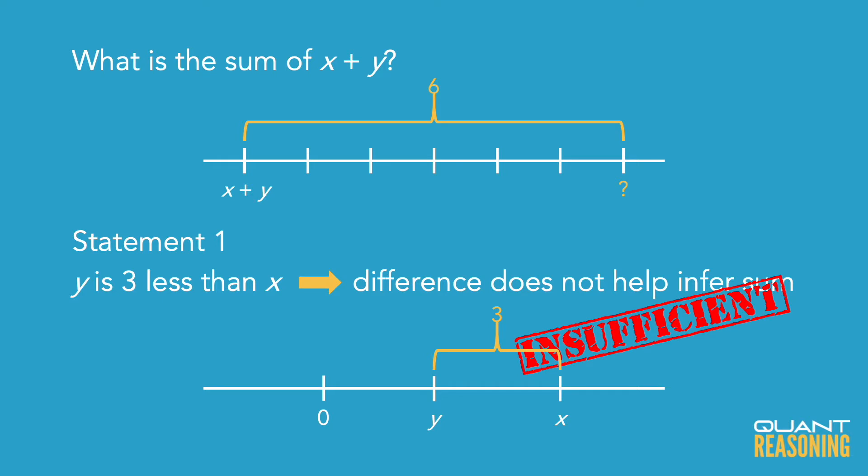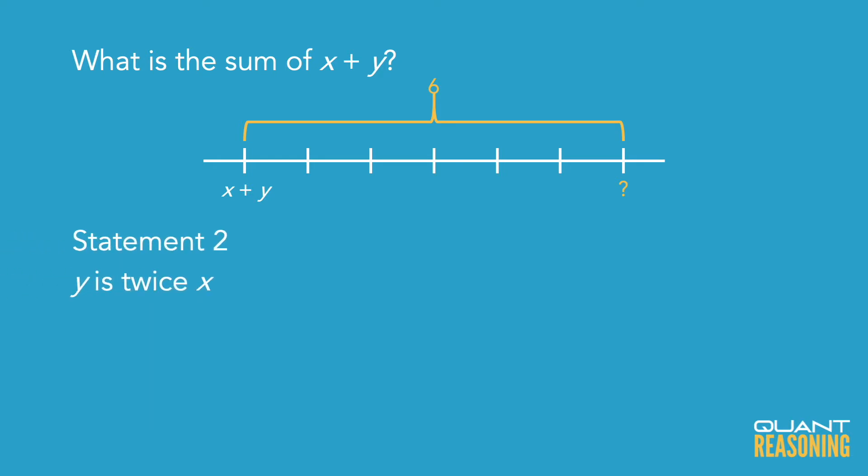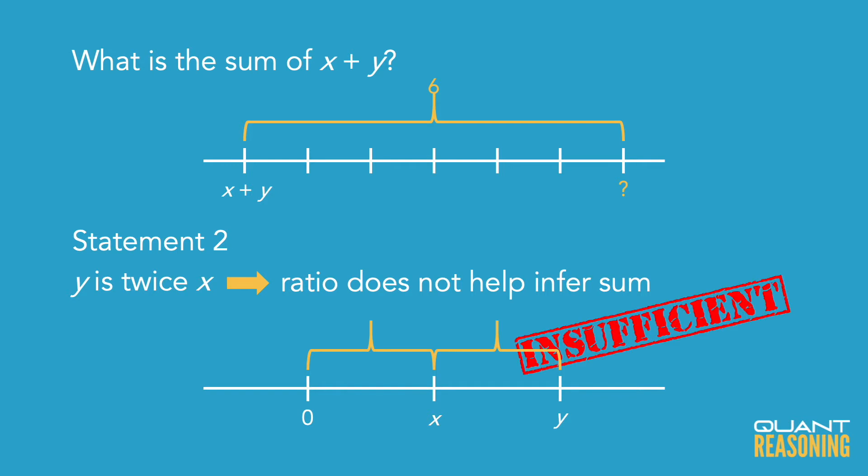And statement two gives us the ratio of x to y, but knowing the ratio of two points on the number line also does not allow us to infer their sum. So this is down to answer choices C versus E. So let's finish it off right after the intro.